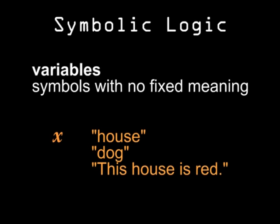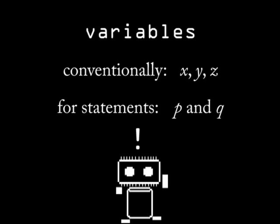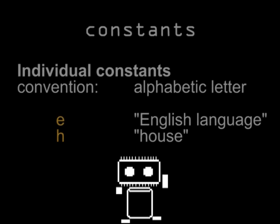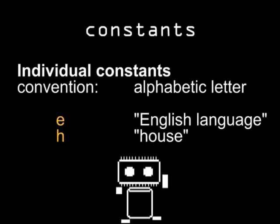These symbols will help us strip our language down and take a good look at the structure. For variables, I can use symbols like x, y, and z. For statements with some truth value, it's common to use p and q. These are all conventions, of course. In concrete cases, you will want to use a symbol that helps you make sense of the logical form — say, e, when you're exclusively reading e as the English language. In this case, you're using that symbol as an individual constant, a name with a specific interpretation.